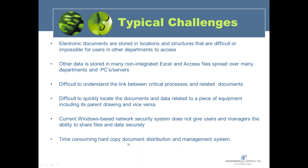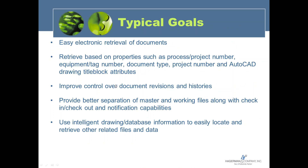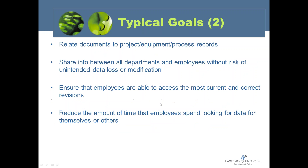Going to electronic search, view, and print for operations and maintenance people really cuts the time needed for hard copy document distribution. People want to control document revisions and histories, separate master and working files, and ensure that when people access documents they're always getting the most current and correct version — so maintenance is not being done off an old file retrieved from a Windows folder or an old print pulled out of a toolbox.